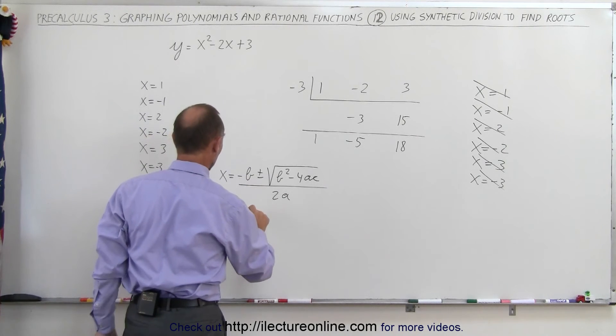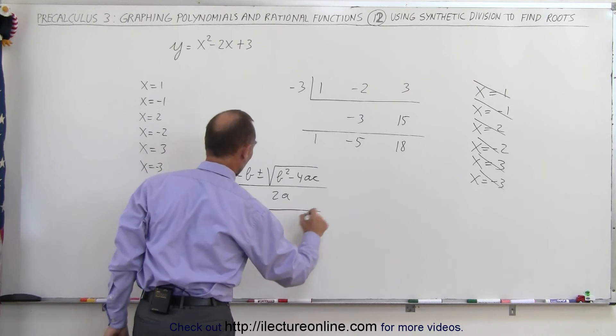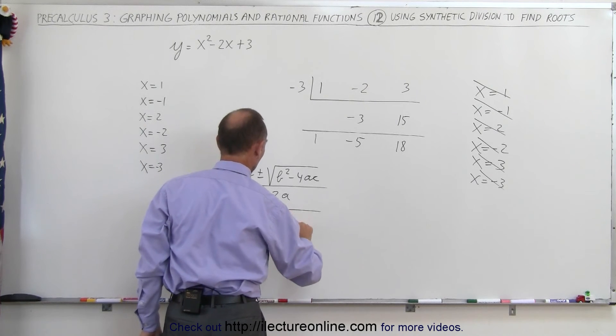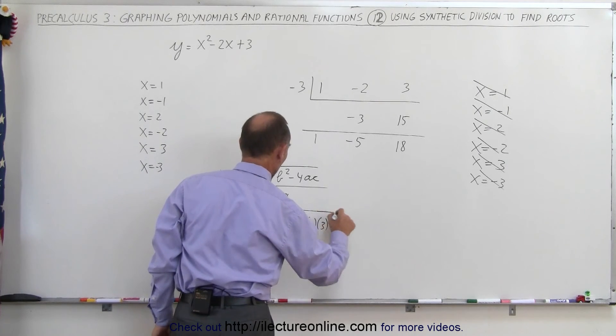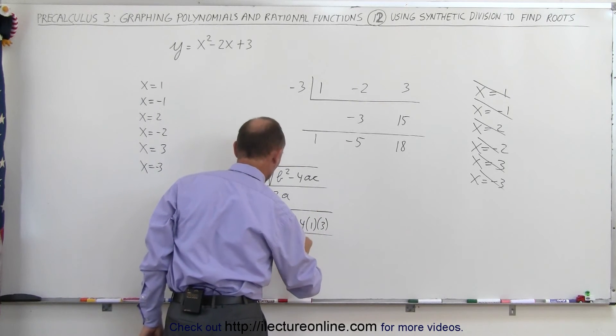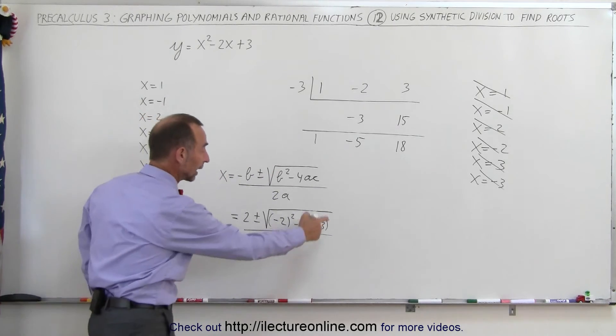B would be negative 2, so that would be negative times the negative 2 is a positive 2, plus or minus the square root of negative 2 quantity squared minus 4 times a times c, all divided by 2a, which is 2 times 1. Now we can determine whether or not we have roots when we look at the determinant.